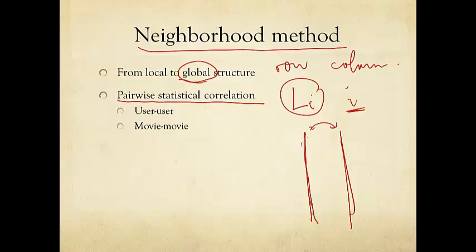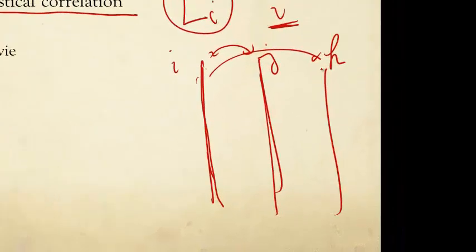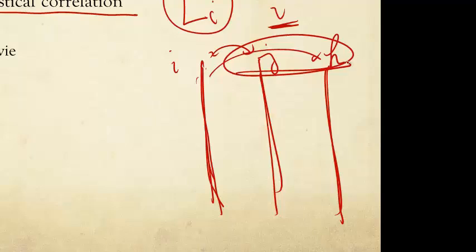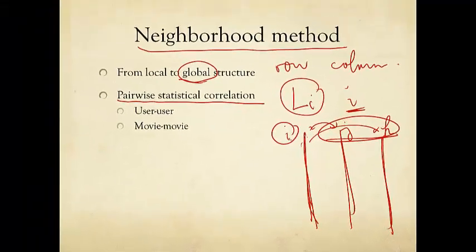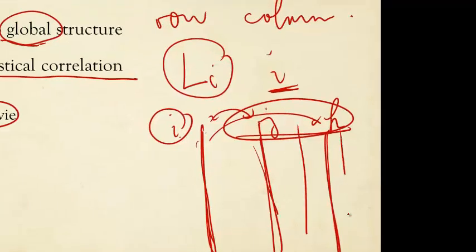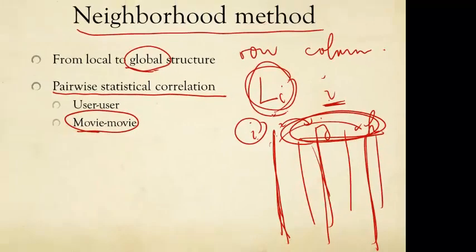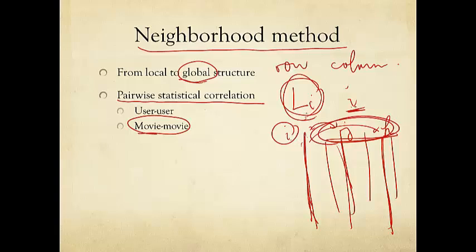And then we look at another pair of movies. Still movie i, but instead of comparing with movie j, we compare with movie k. And look at the ratings from between these two columns. And then we're going to pick up all those movies that are somehow very similar or very dissimilar compared to movie i. Both kinds of movies will be very useful.